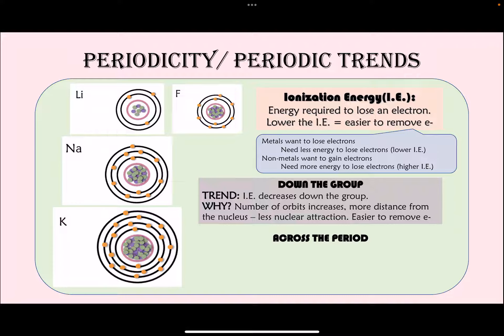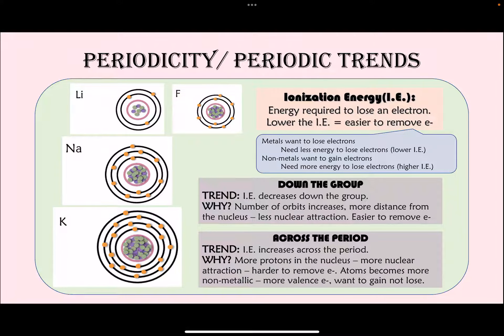Across the period, there is more nuclear attraction, so it becomes very hard to break that attraction and remove an electron from the valence orbit — ionization energy increases across the period. Also, as we go from left to right we are moving toward non-metals, which do not want to lose electrons, making it even harder to remove an electron. Specific ionization energy values are given in Table S.